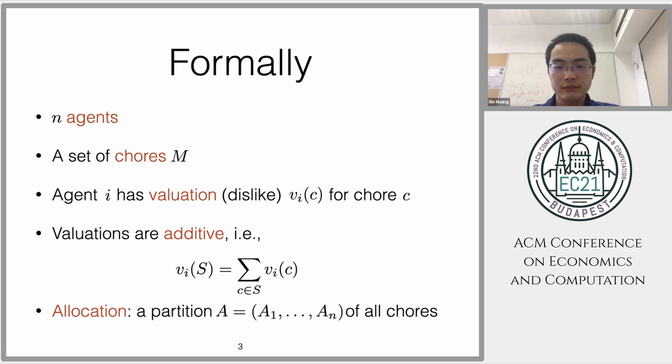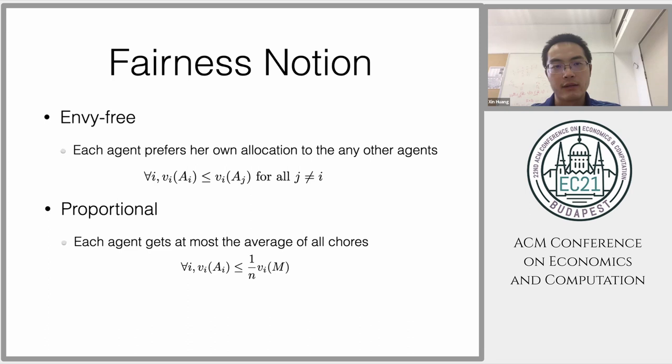For fairness, there are two most well-known fairness notions: one is envy-free and one is proportional. For envy-free, each agent will prefer its own allocation to any other agents, so you get the least bundle among all. For proportional, each agent will have at most the average of all chores. The problem is that these two fairness notions may not exist, even for a very simple case with two agents and one chore.